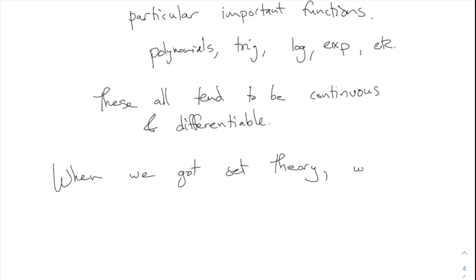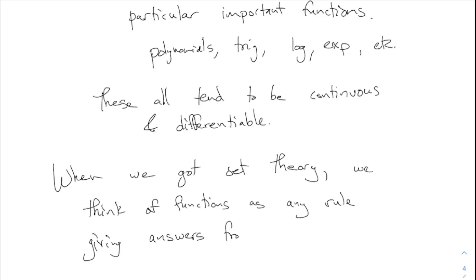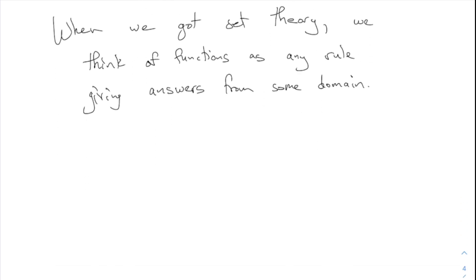It's not until we developed set theory that we started thinking of functions as any rule giving answers from some domain. A function doesn't need a formula — it's anything where you tell me x and I tell you f(x). It doesn't have to be a combination of polynomials or anything like that. For this reason, once set theory became popular, people started thinking about very strange and wild functions.